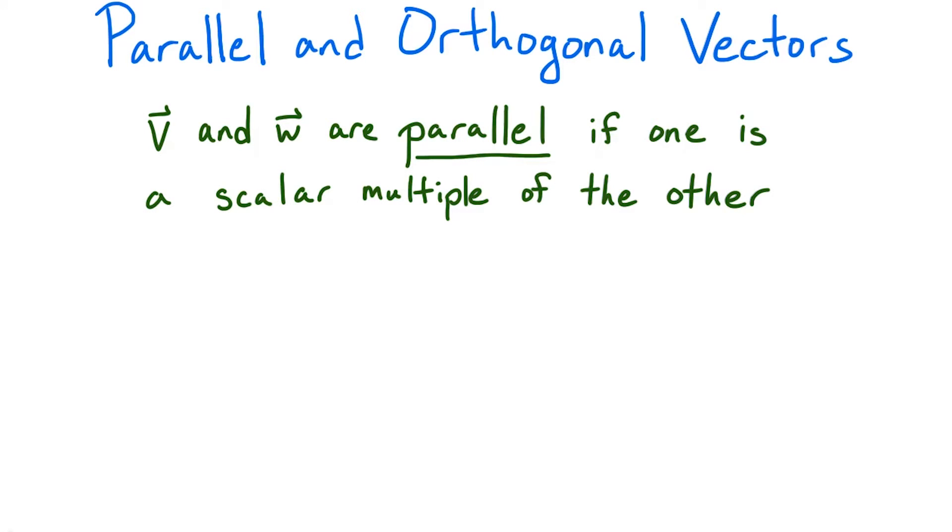We say that two vectors are parallel if one is a scalar multiple of the other. So if v is a vector, then v and 2v are parallel, as are v and 1/2v, as are v and -v. In fact, since the zero vector equals zero times v,